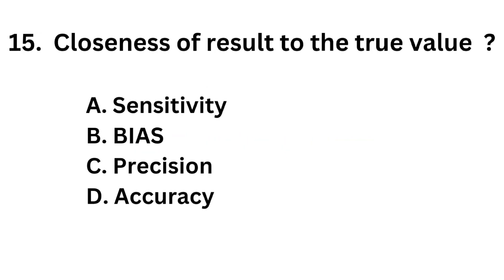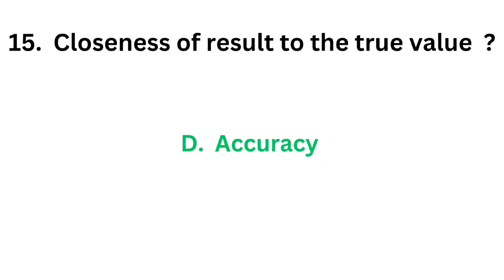Question number 15. Closeness of a result to the true value. Option A: Sensitivity. Option B: Bias. Option C: Precision. Option D: Accuracy. The correct answer is Option D, Accuracy. Closeness of a result to the true value is accuracy.